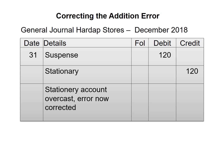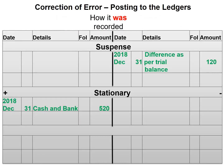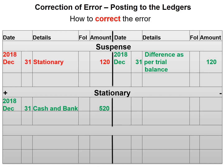Let's have a look at our ledger. How this was recorded is there was a debit balance of 520 in our stationery account, so there was a difference of 120. Therefore, we recorded a 120 on the credit side of our suspense account.